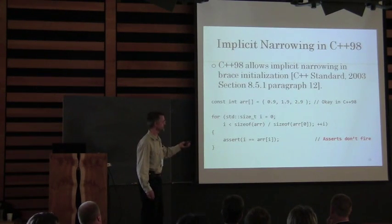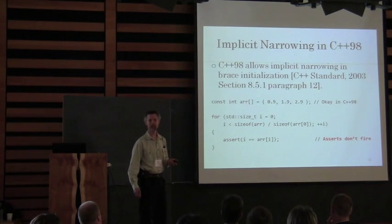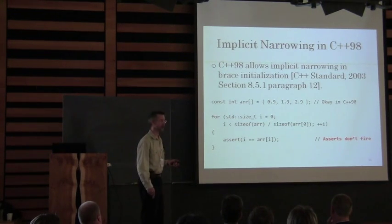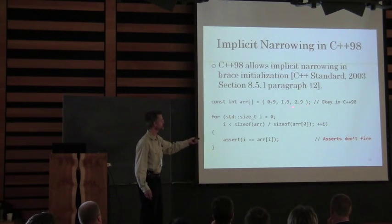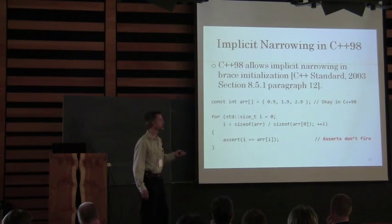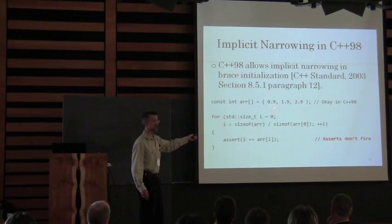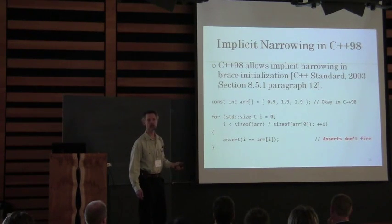Here is a case where the C++98 standard explicitly allows — requires — narrowing to be allowed. I've got this array of ints and I'm brace-initializing it with doubles. The compiler says this is okay, this is just fine. If we run a for loop and do an assert, the asserts will not fire.